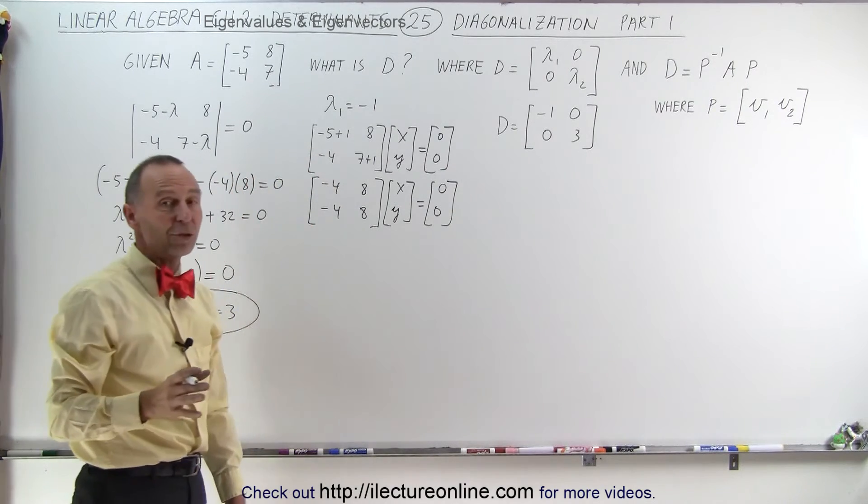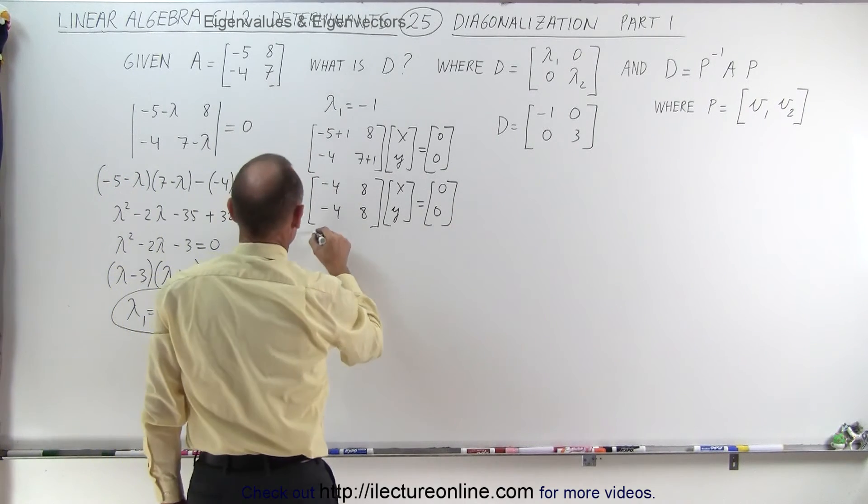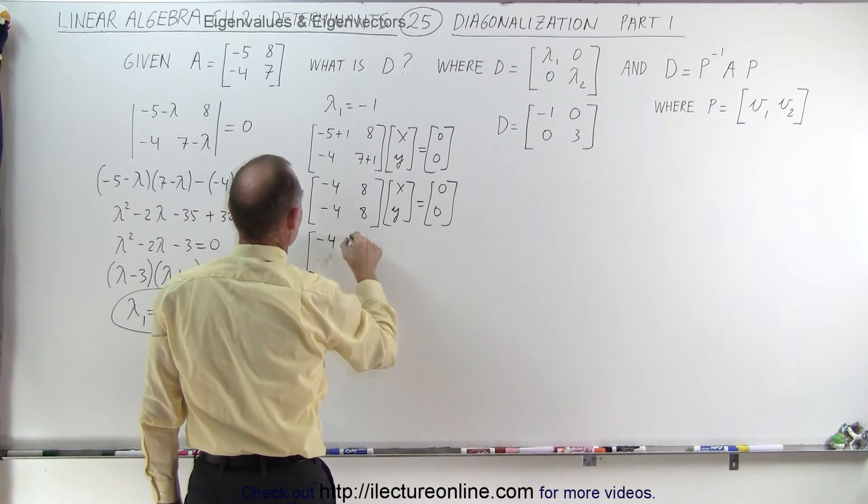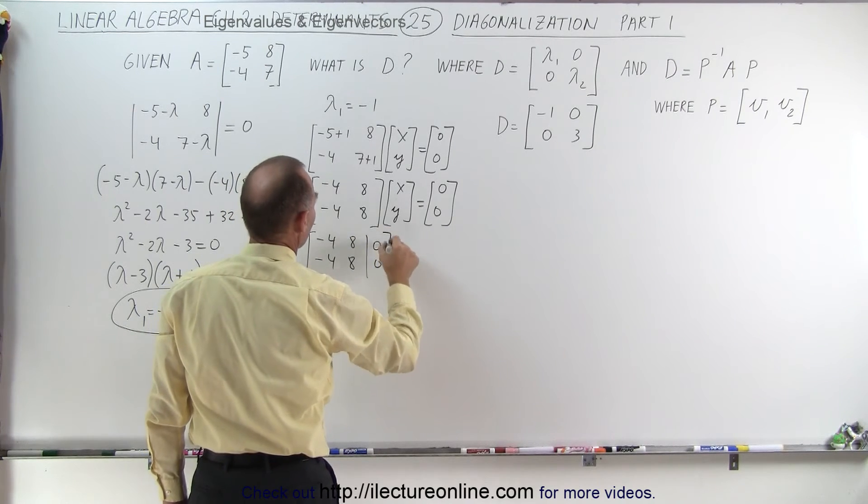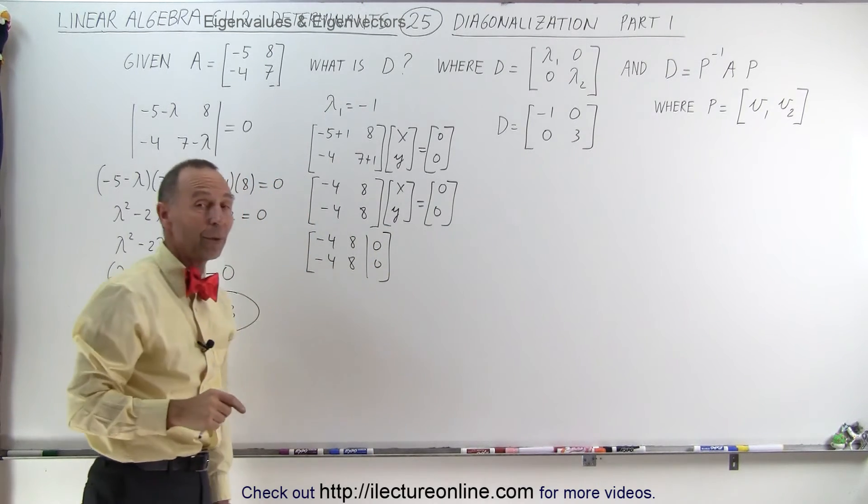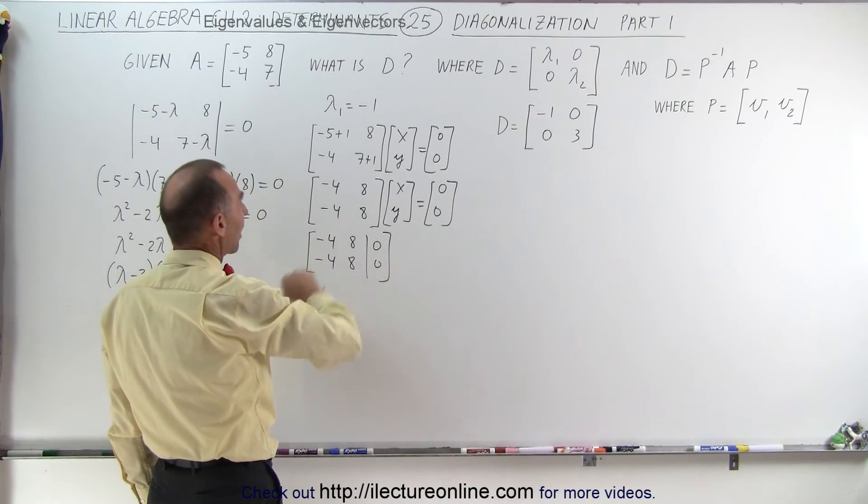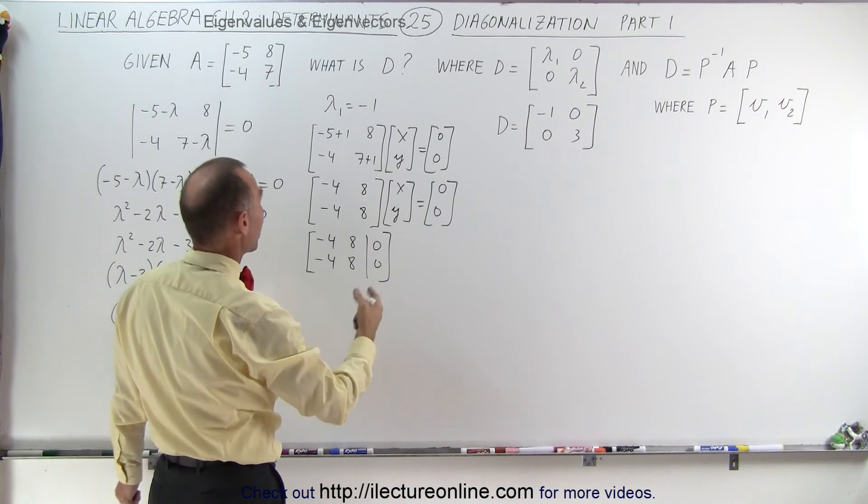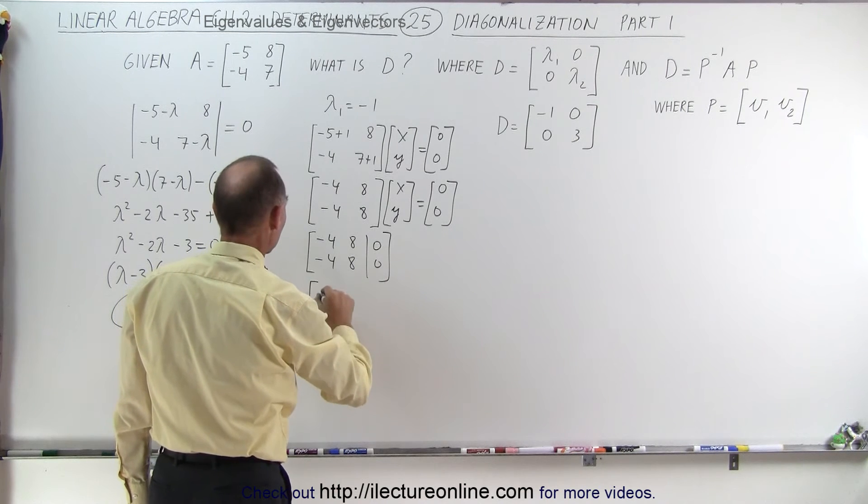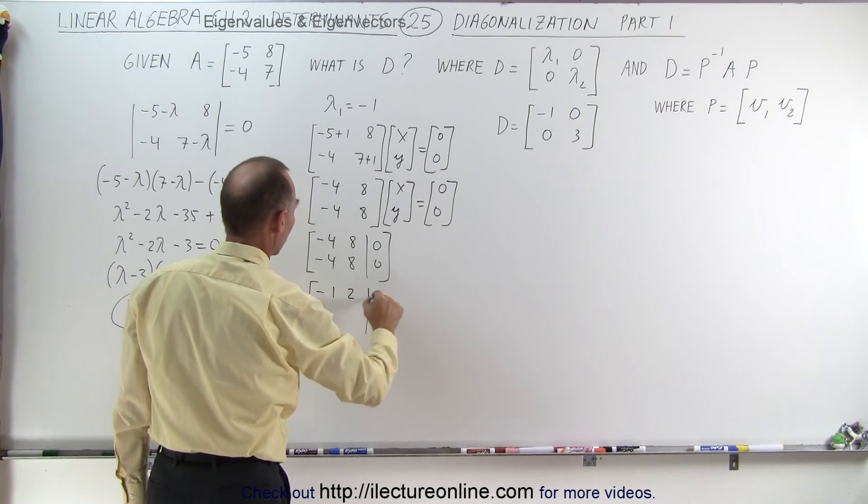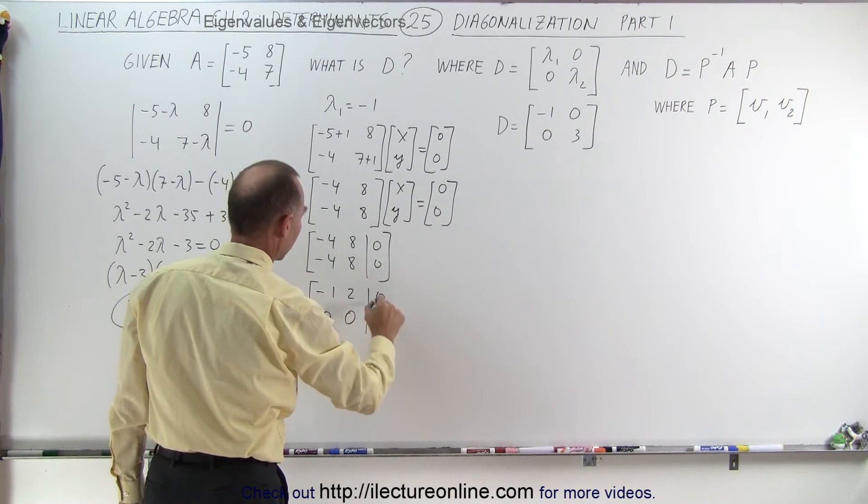Now we place that into the augmented matrix. Minus 4, 8, 0, and 0. And of course, it's quite obvious at this point that these are duplicates. So we can get rid of one of them. Divide the top one by 4. And this can then be written as minus 1, 2, 0, and the rest zeros.